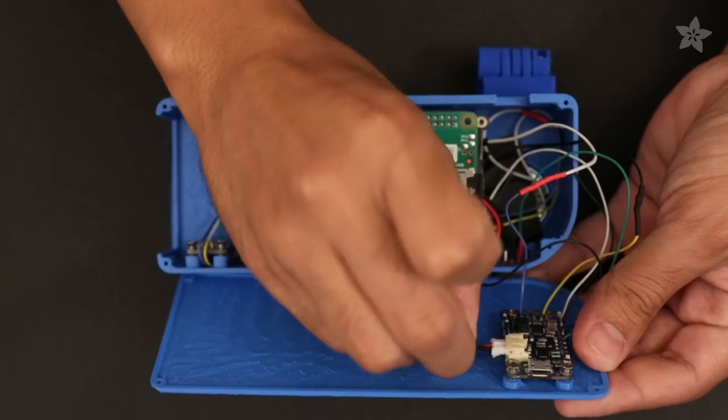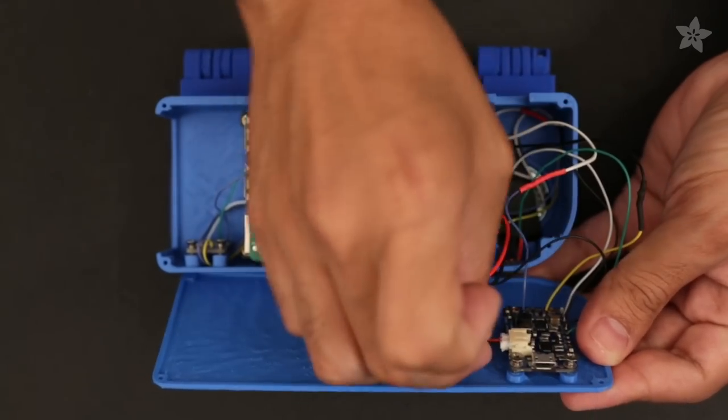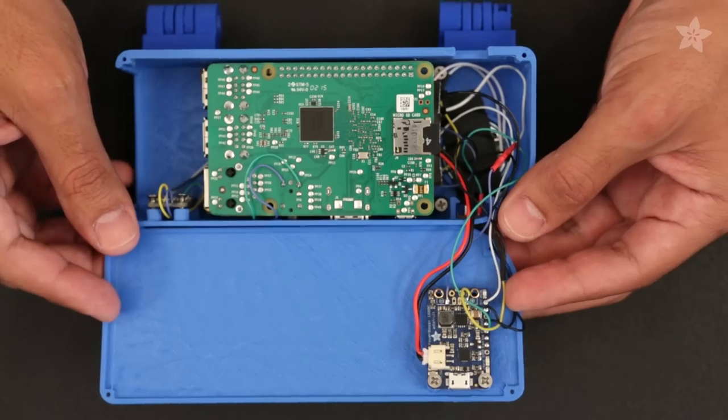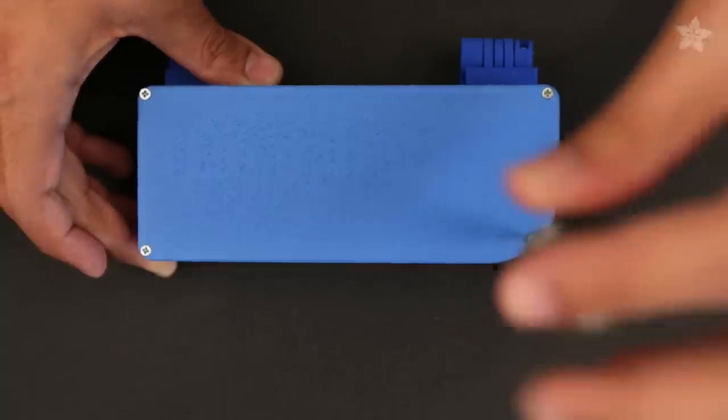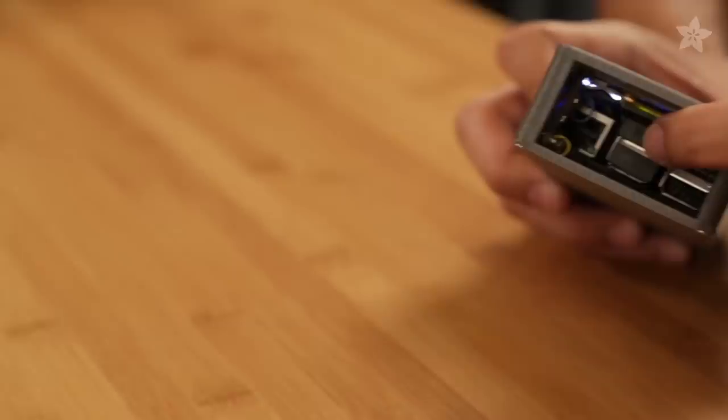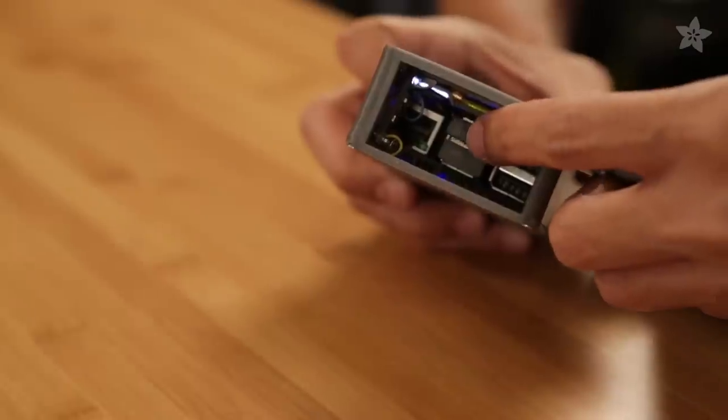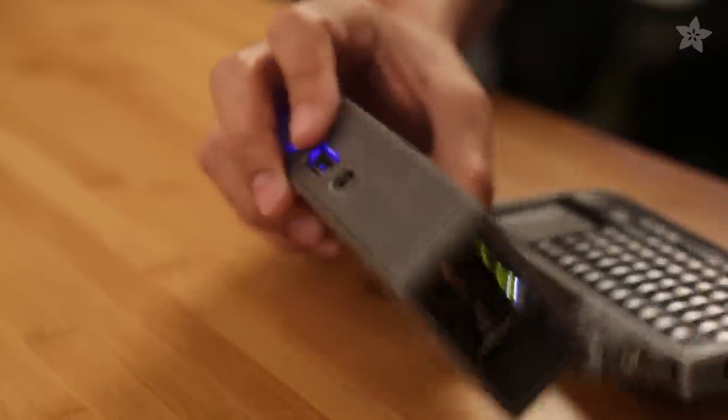The JST cable on the LiPo battery simply connects directly to the JST port on the PowerBoost 1000C. To close everything up we'll use number 256 machine screws to secure the cover to the enclosure. The USB ports are actually tucked inside the enclosure so your USB dongles are nicely hidden and out of the way.